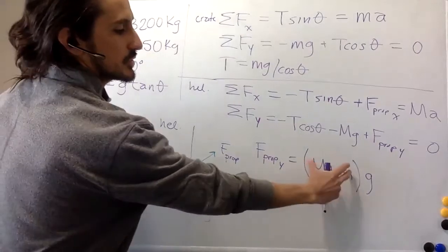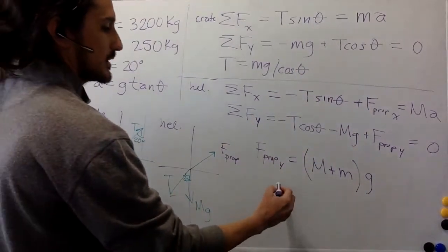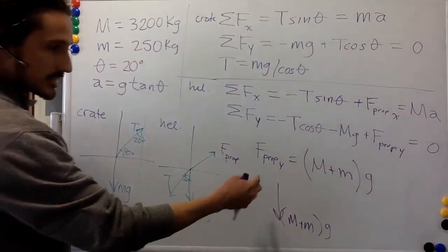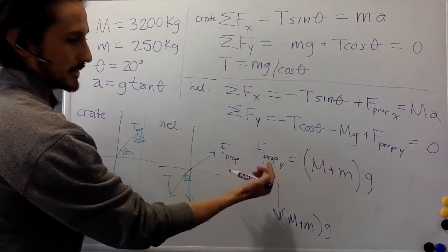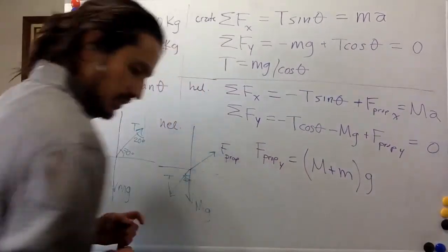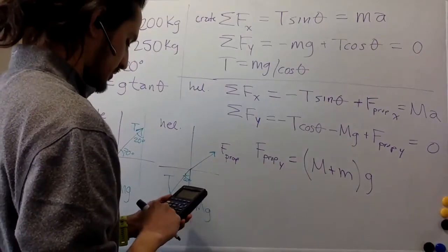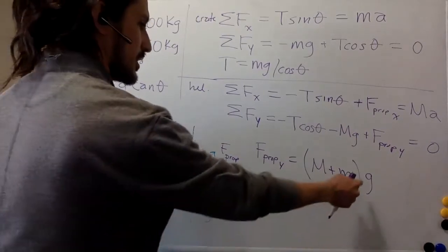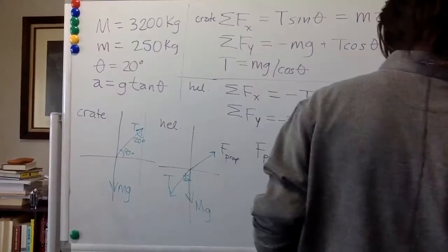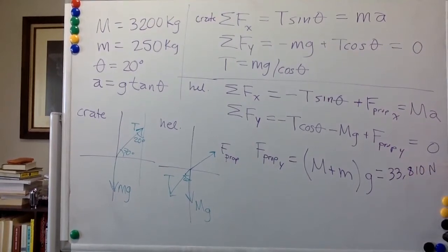And this makes a lot of sense, because this is the whole mass. So if you consider the system as one, you know that the weight will be M plus m times g, that will be the weight. And we want the propulsion to be the same in order to cancel them out. So this one will be negative, this one is positive. So the propulsion in the y direction: 3200 plus 250, so it's 3450 kilograms times g. So that is 33,810 Newtons.